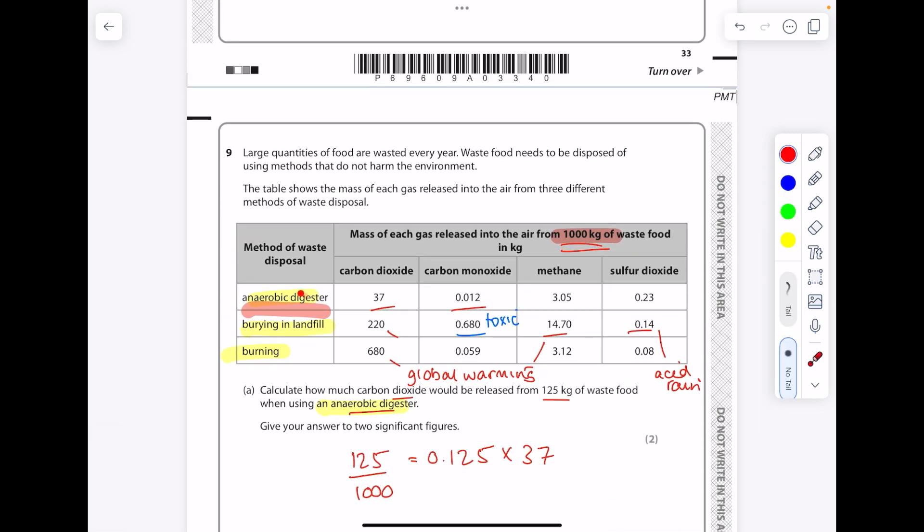Now we can really touch on the points. They're asking about the anaerobic digester. I'm going to say yeah it's better than burying in landfill because it doesn't release as much carbon dioxide and methane which are both greenhouse gases that contribute to global warming. So we're going to have less loss of biodiversity, less habitat loss, less flooding of low-lying land. But one big disadvantage is the fact that the anaerobic digester produces the most amount of sulfur dioxide which remember contributes to acid rain.